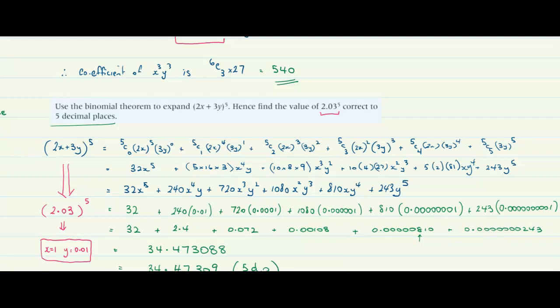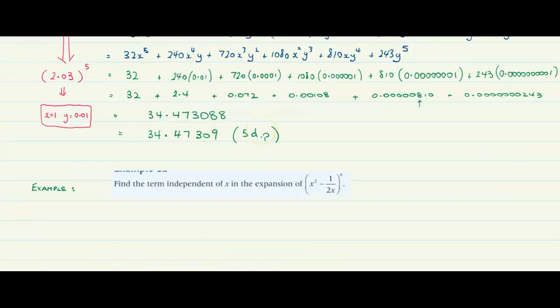This is our last example before we start on exercise 1i — I'm actually going to do the first question of 1i with you as well. This is a very common type of question. Find the term independent of x in this expansion. Independent of x means we want the constant term. Our best starting point is always the general term.